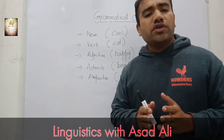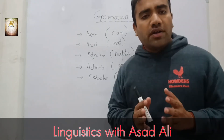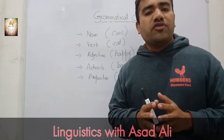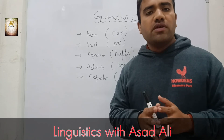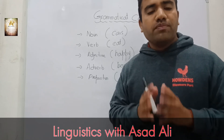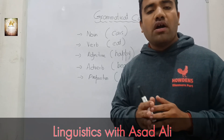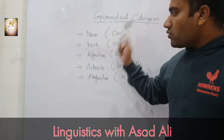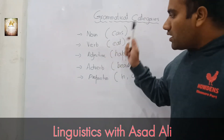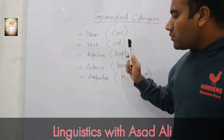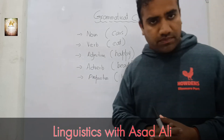So in this video I am giving you the idea of what are the basic five grammatical categories. In traditional grammar they are nouns, verbs, adjectives, adverbs, and prepositions.